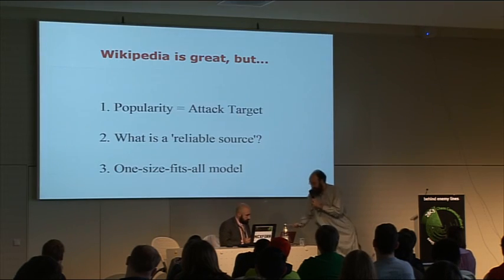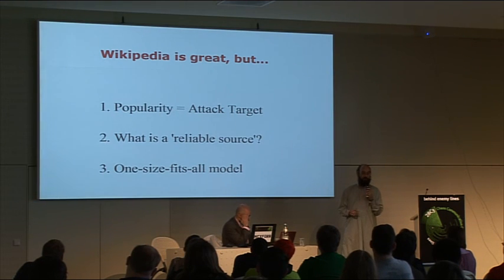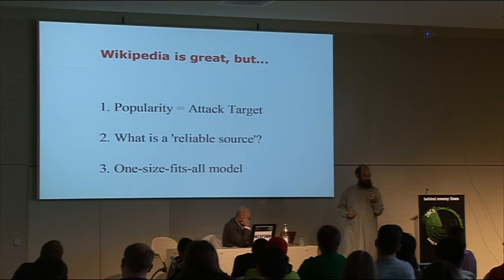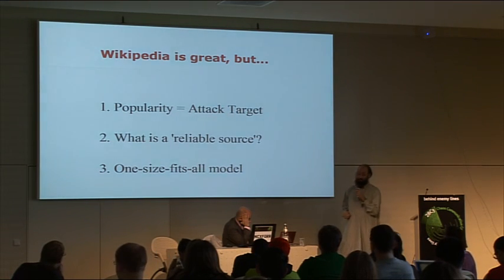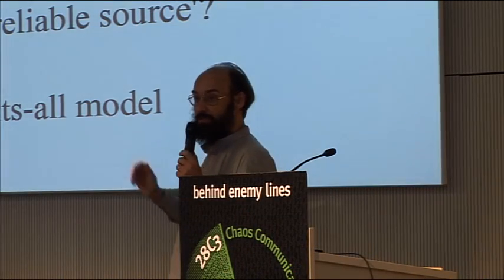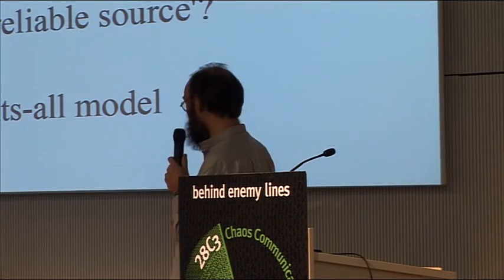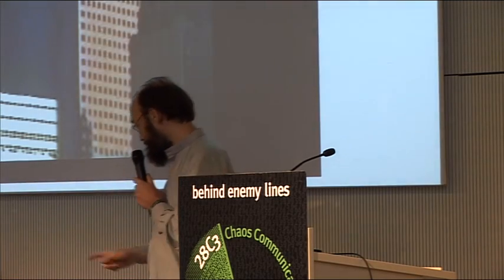Wikipedia is a very good beginning for research, but there are problems with it. It's a popular attack target. Wikiscanner showed that certain people would like you to think that what's on Wikipedia is the whole truth. Wikipedia decides it wants reliable sources — newspapers, television. But if you control the newspapers and the television, you control Wikipedia.